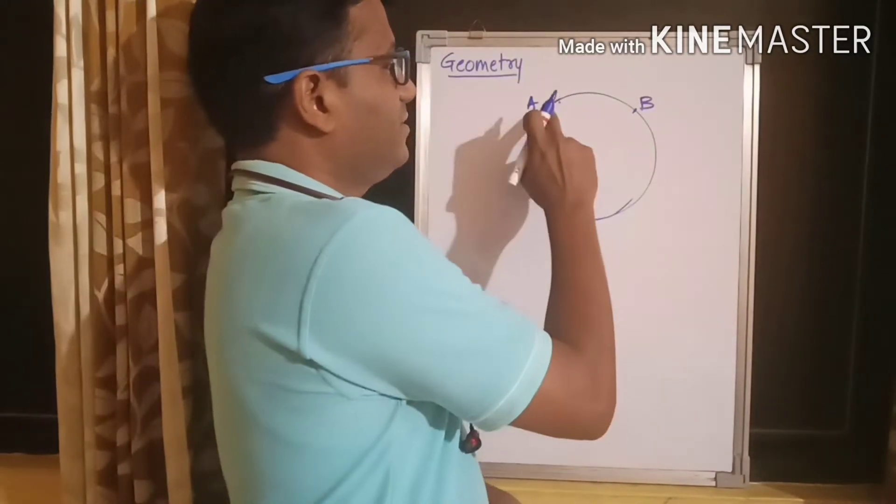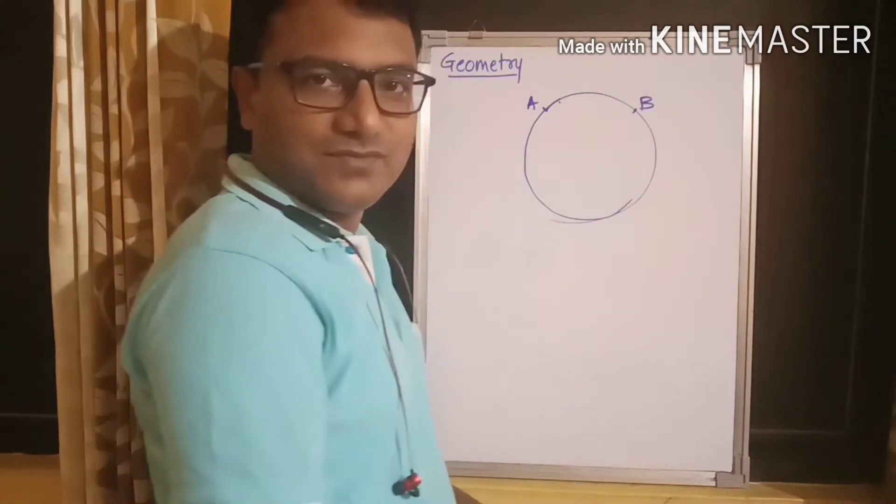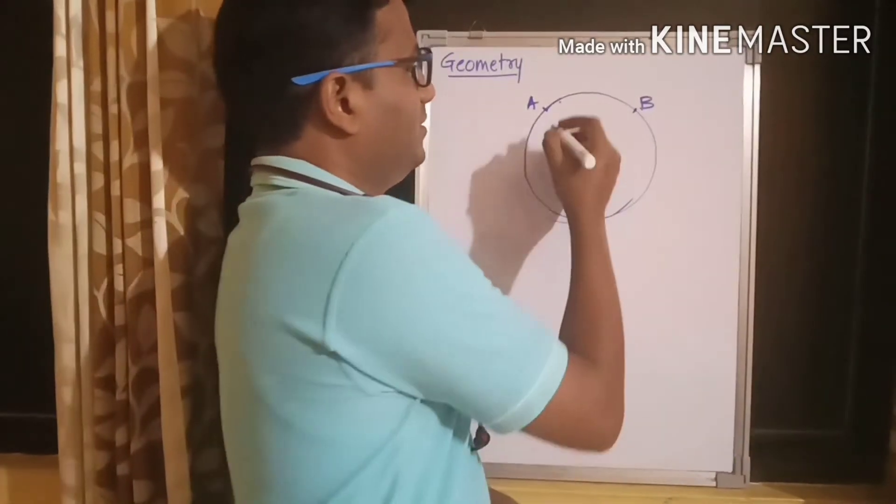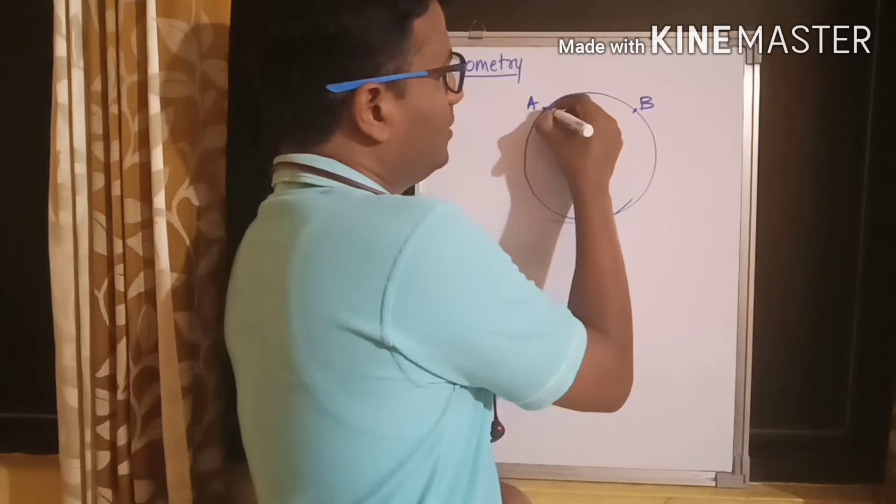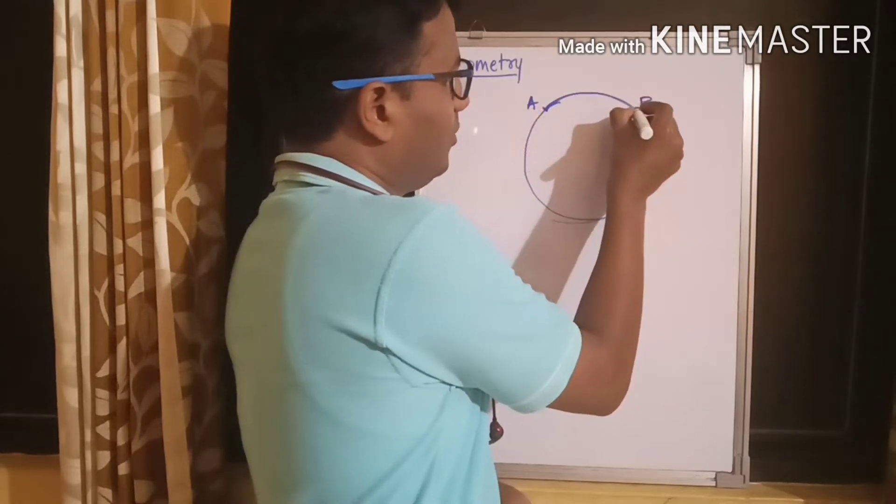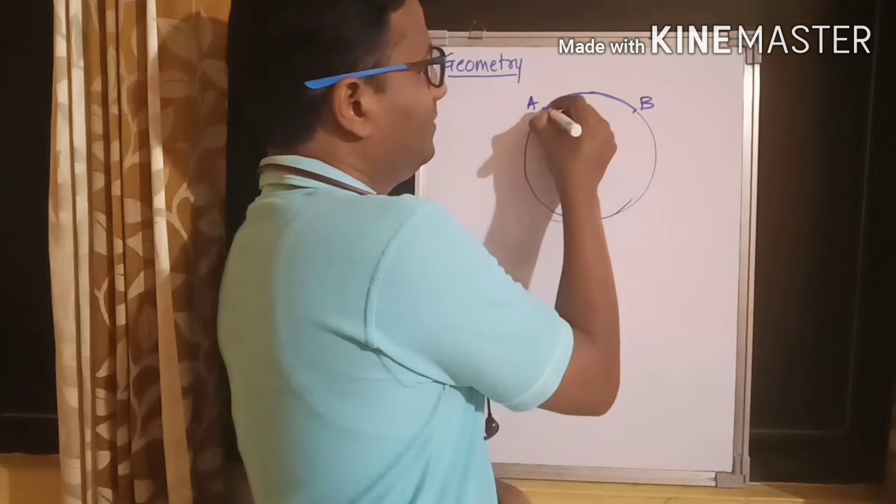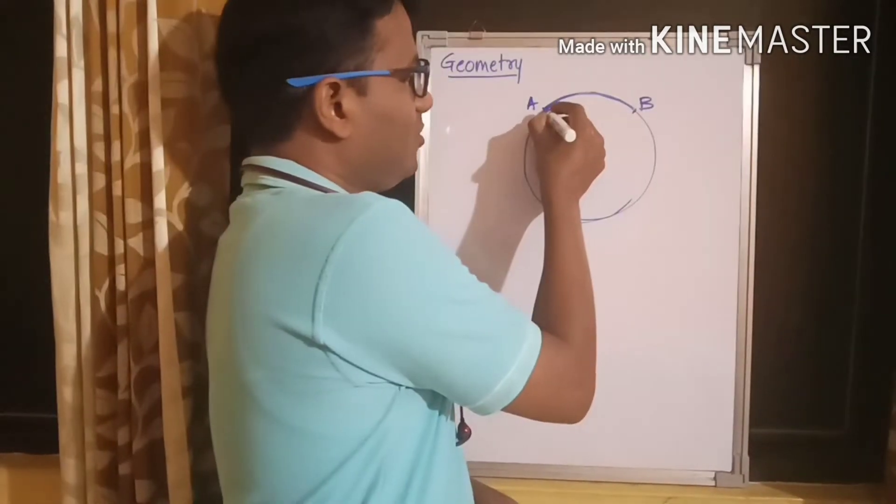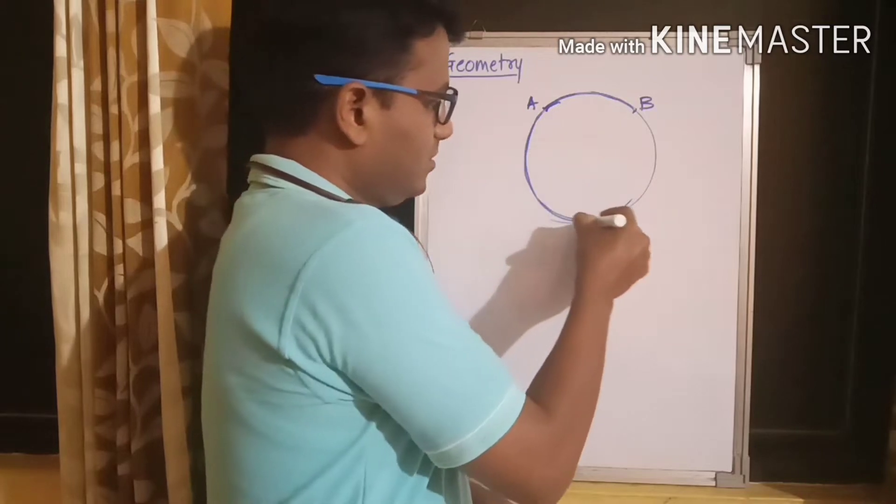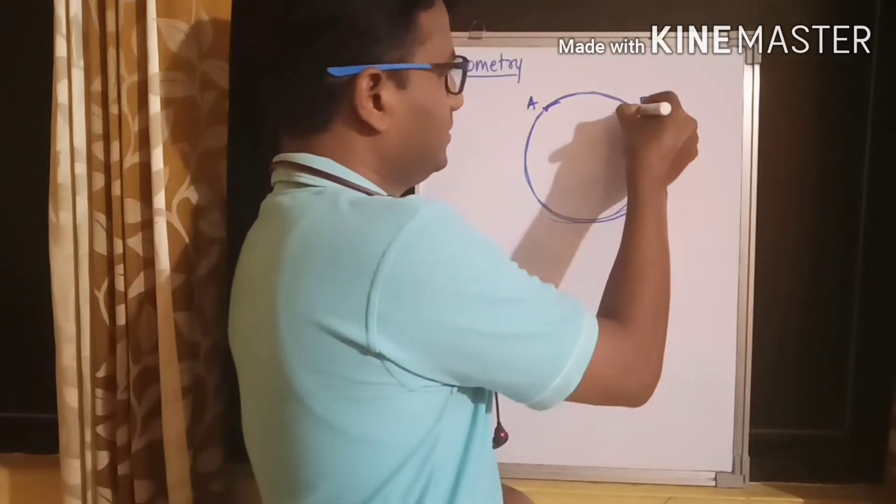Now, how can Mr. A reach Mr. B? Okay, you can say that he can walk along the periphery of the well and reach Mr. B like this.